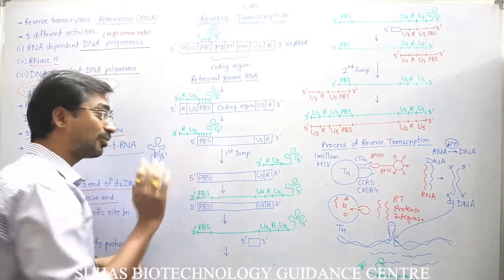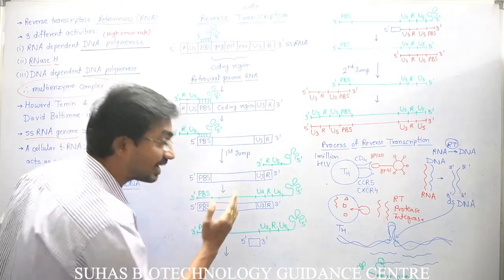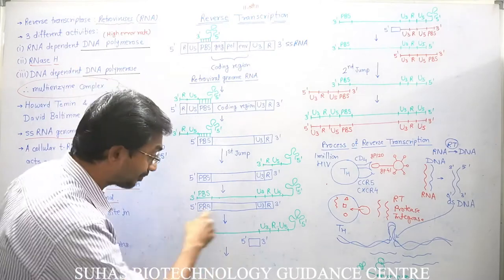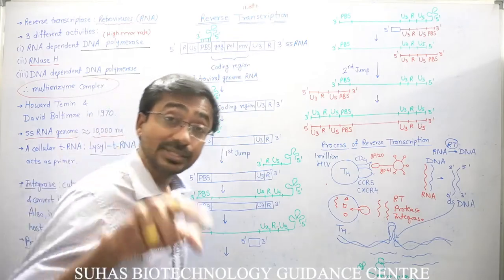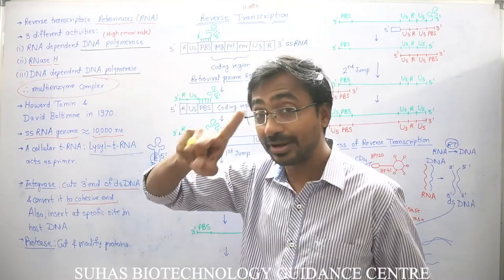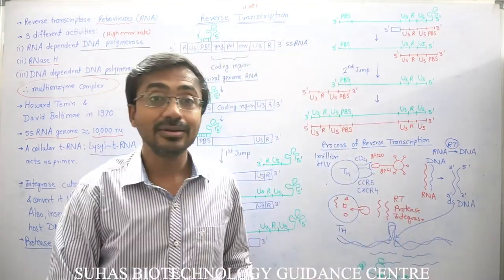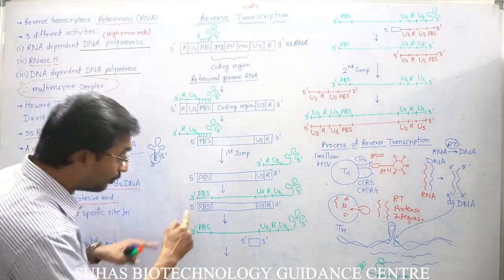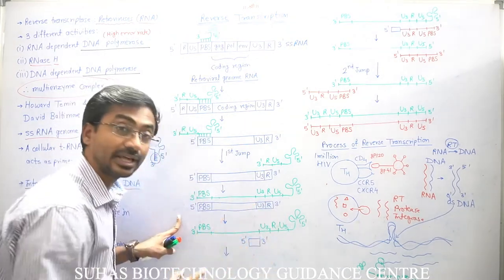Once the genome is completely copied, the RNA has no further use and is degraded again by the RNase H activity of reverse transcriptase. However, the DNA-dependent DNA polymerase activity still needs a primer. Reverse transcriptase leaves a small RNA strand from the coding region (gag, pol, env) undegraded, and this small RNA strand acts as the primer for DNA-dependent DNA polymerase activity.